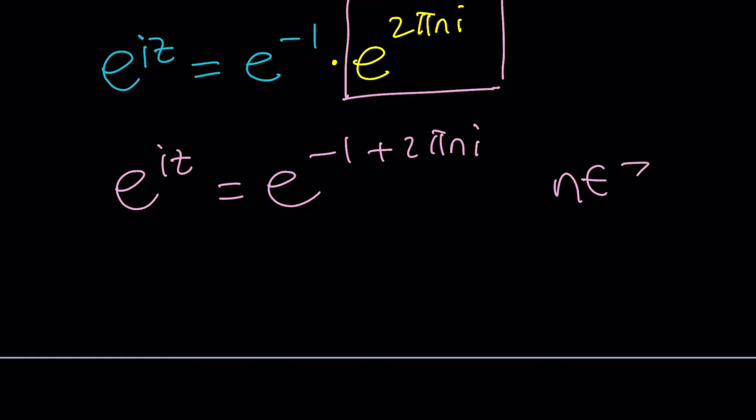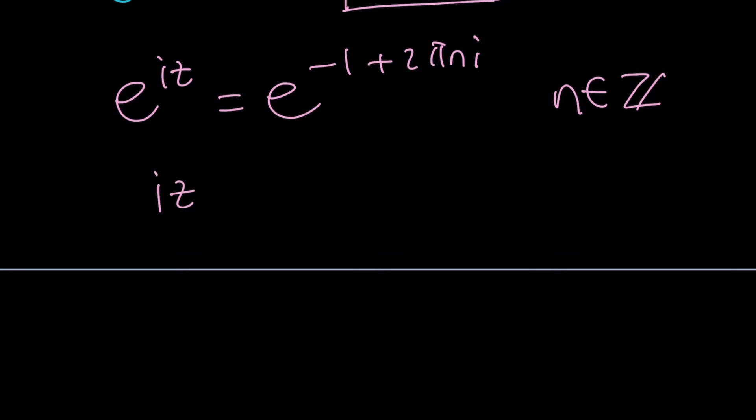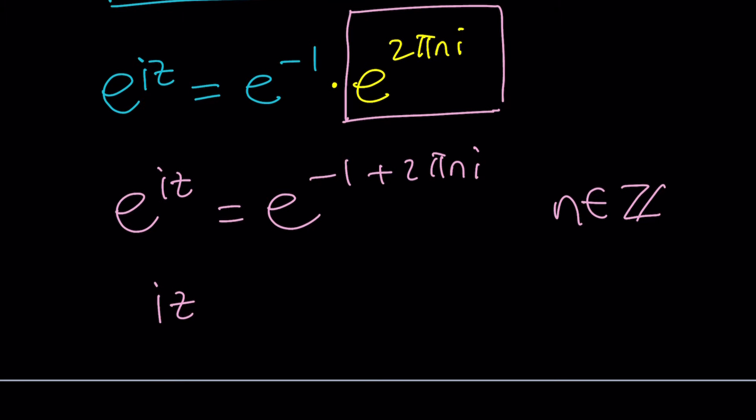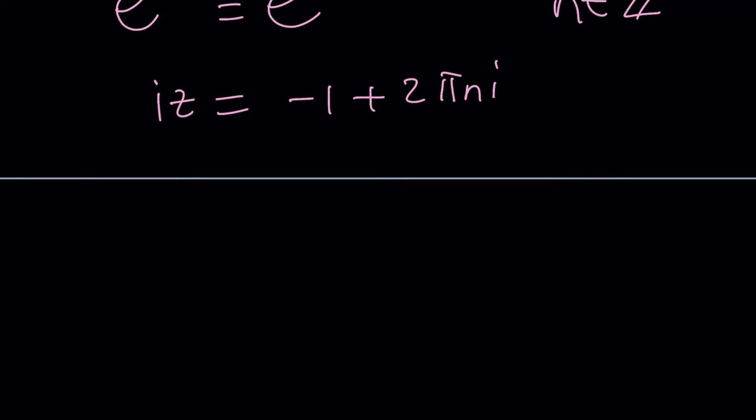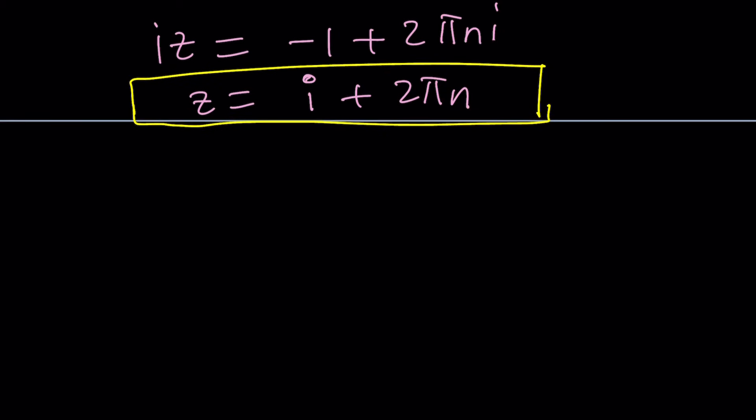So from here you get negative 1 plus 2πni. By the way, n is an integer, positive or negative. And from here we get iz equals, oops I think I messed up again, did I? No, oh no that's good. 2πni. And now eventually you're going to divide both sides by i, and when you divide here you're going to know that this is going to become i, and the i here is going to disappear, leaving us with a really nice expression: z equals i plus 2πn, where n is an integer. These are basically all the solutions, and if n is equal to 0 you get the principal solution, which is z equals i, which is the obvious one. And this brings us to the end of this year. Thank you for watching. I hope you enjoyed it. Please let me know. Don't forget to comment, like, and subscribe. I'll see you next time with another video. Until then, be safe, take care, and bye bye.